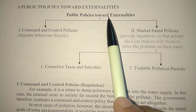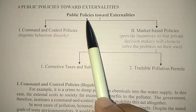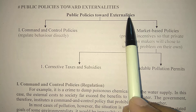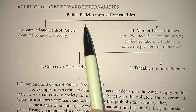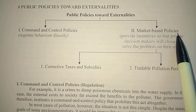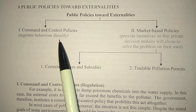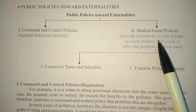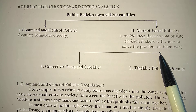Public policies means policies made by the government. There are two types of policies for externalities: command and control policy, where the government directly regulates externality behavior; and market-based policies, where the government uses incentives — positive incentives for positive externality and punishment or fines for negative externality — to solve the problem.